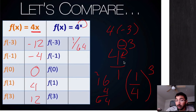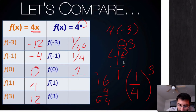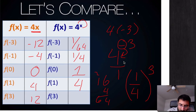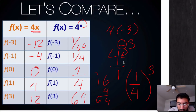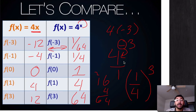The same thing happens again: 4 to the negative first power is 1 over 4. 4 to the 0 — anything to the 0th power is 1. 4 to the first is 4. And 4 to the third — 4 times 4 times 4 — is 64. So that's how we plug in function values. Notice that these values are radically different. Even though we had the same input, negative 3, we got two radically different outputs, because our variable changed from being simply multiplied by our constant to being an exponent.